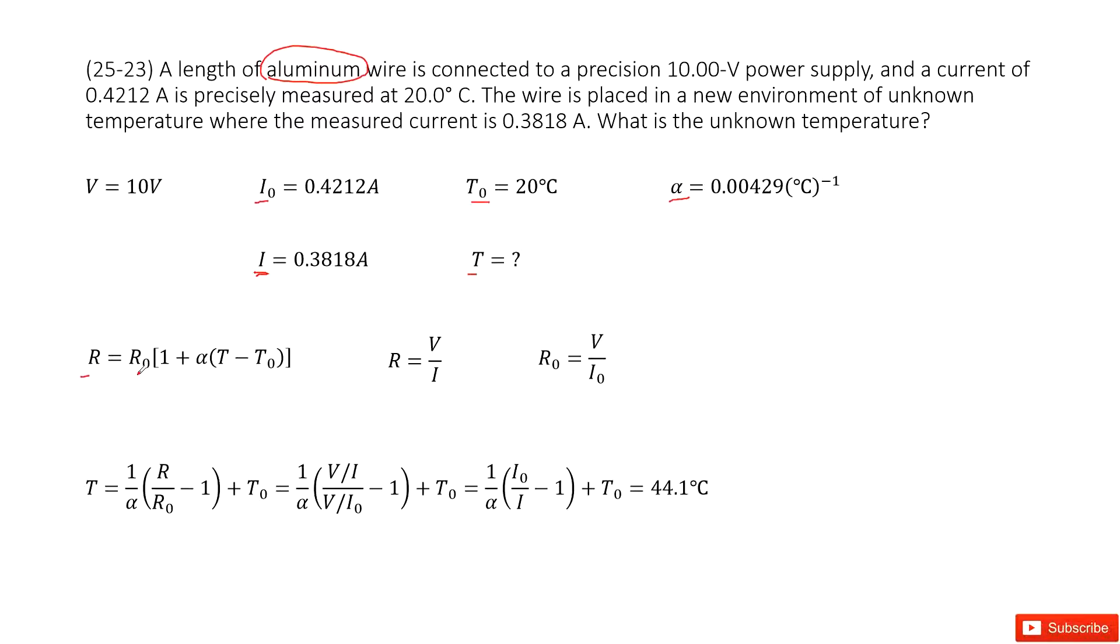Ohm's law, right. You can see the power supply, the voltage is given. The current for initial and final is given. So very straightforward. You can get the final resistance as voltage over current. Initial resistance as voltage over the current at initial. Agree? Yes.